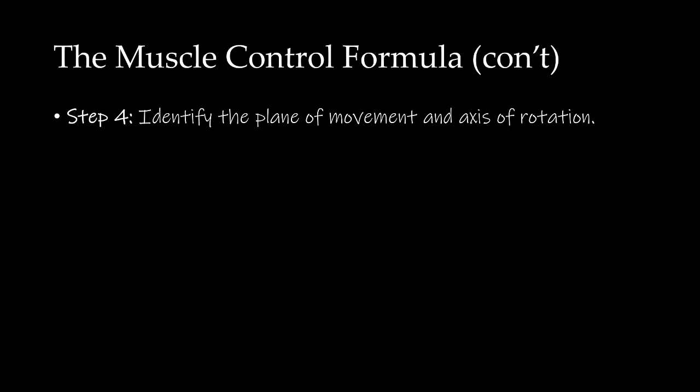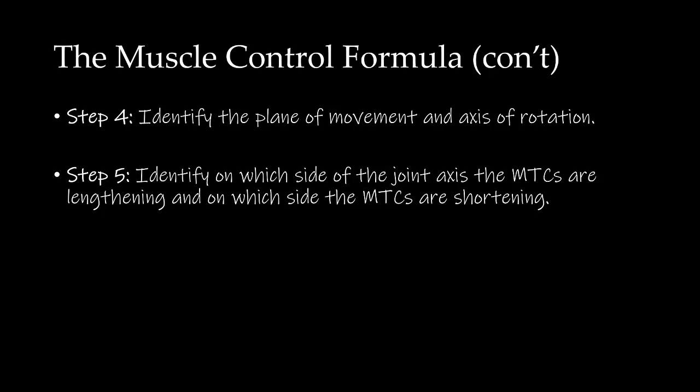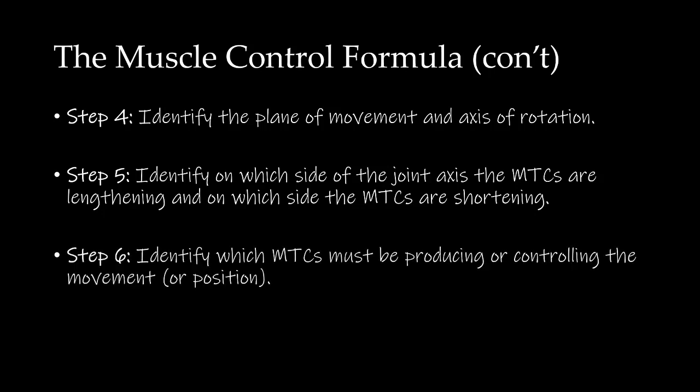In Step 4, we identified that for glenohumeral abduction and adduction, the plane of movement is the frontal plane and the axis of rotation is an anterior-posterior axis through the humeral head. In Step 5, we determined that the MTCs were lengthening on the lateral side — the glenohumeral abductors — and shortening on the medial side — the glenohumeral adductors. In Step 6, since the MTC action was eccentric and it is the lengthening MTCs that control eccentric movement, we determined that the glenohumeral abductors were controlling the glenohumeral adduction eccentrically.